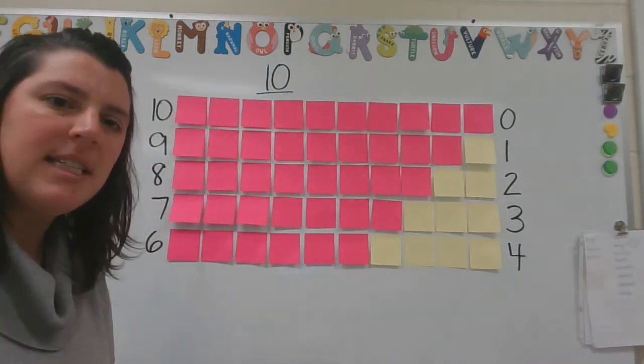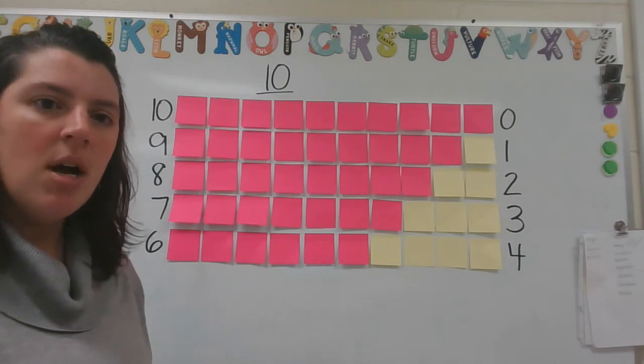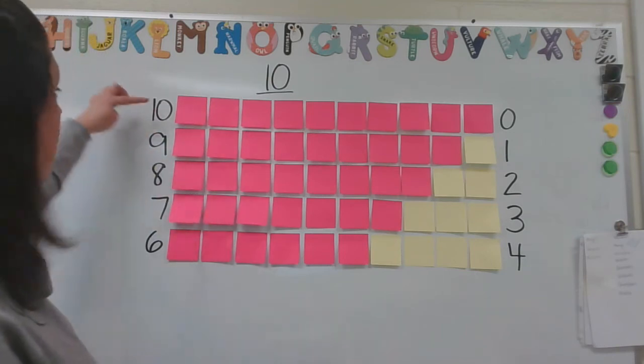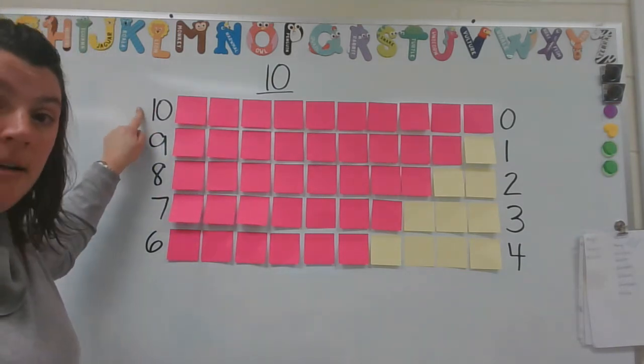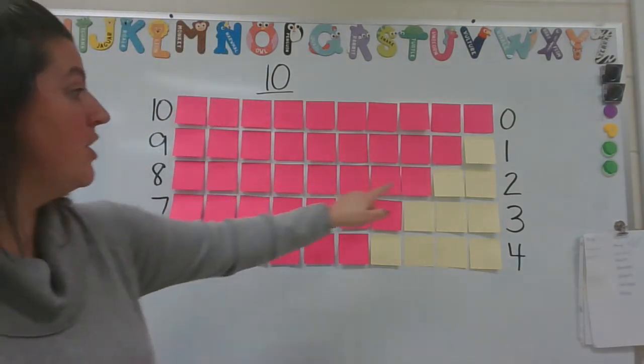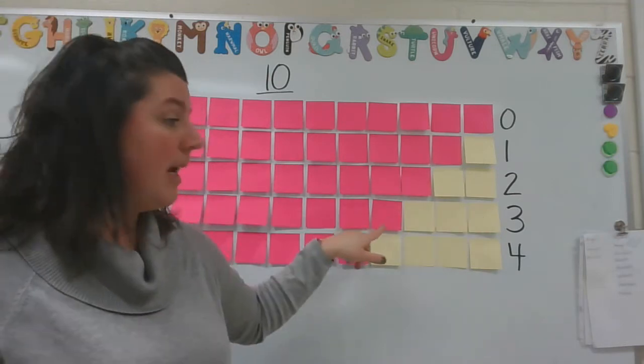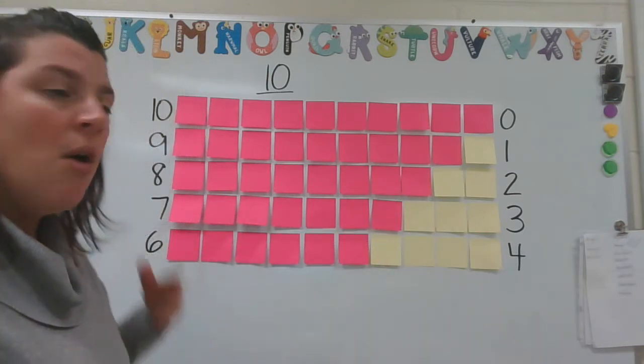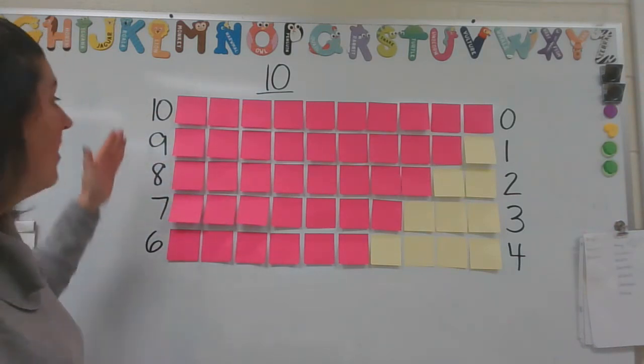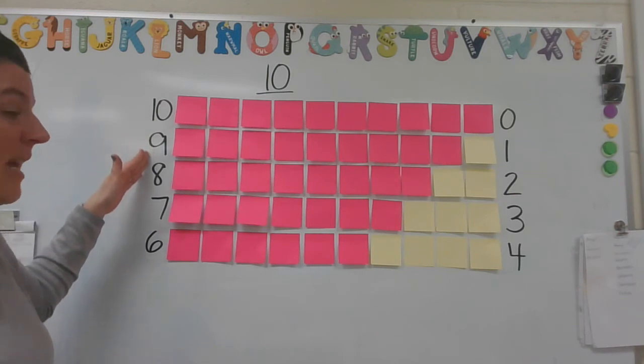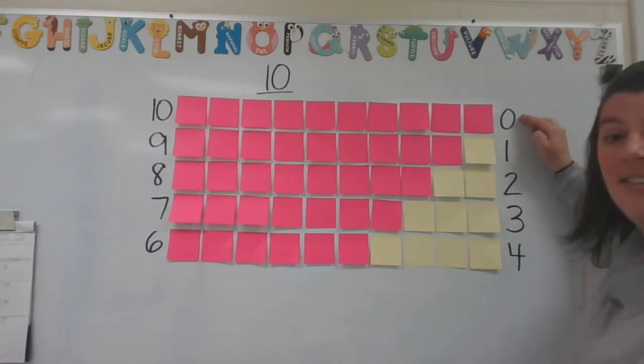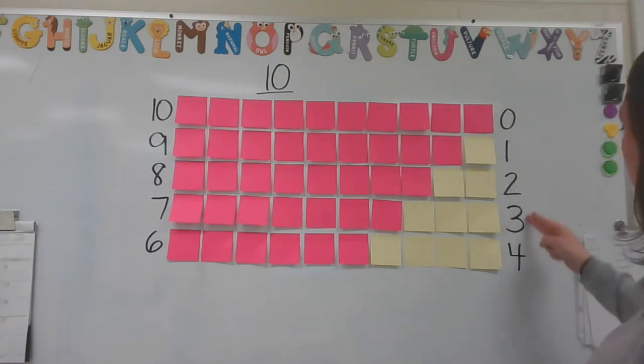So have you noticed what's happening? Each time I'm changing one of the sticky notes to be a different color. I started with all of them as pink, 10. And then I changed 1 to be yellow. This row I changed 2. Then 3. Then 4. What do you notice about the numbers over here? They started at 10 and they're going down. What do you notice about the numbers over here? They started at 0 and they're going up.